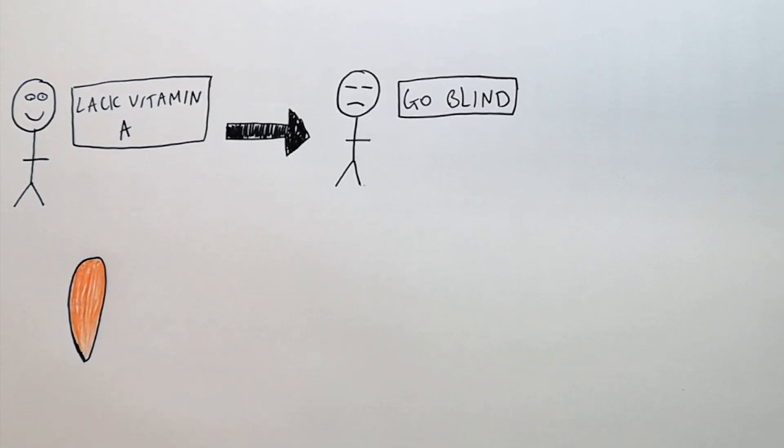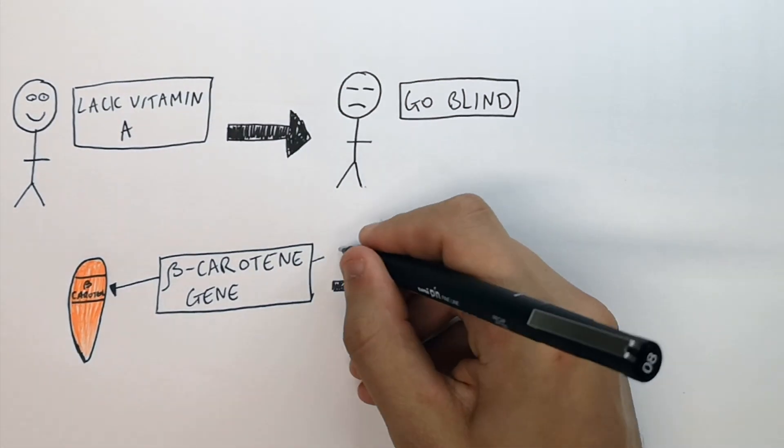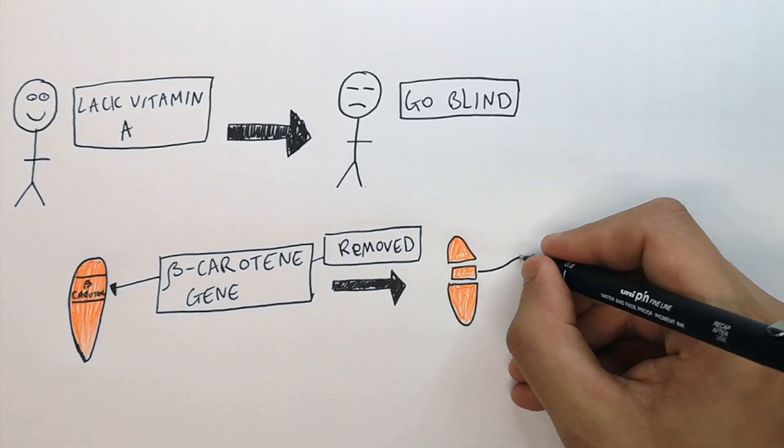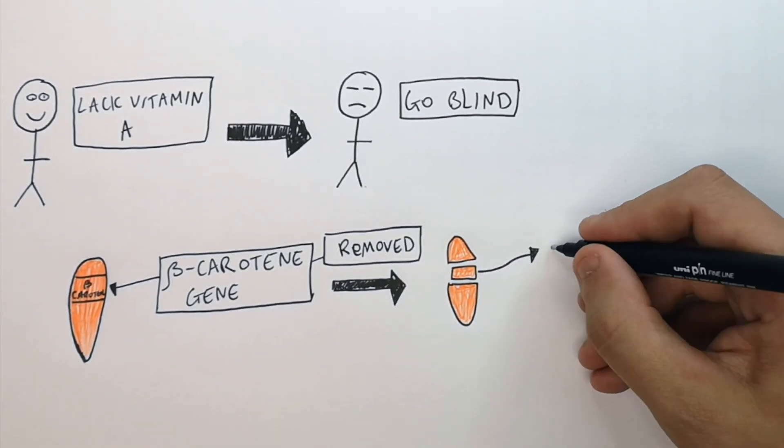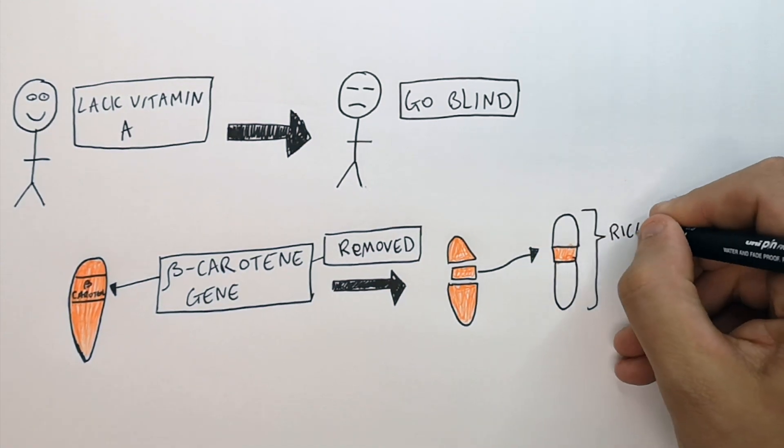To overcome that, you can extract the beta carotene gene from wheat or a carrot. So you will remove the DNA, the gene, from that organism, and then you will insert the beta carotene gene into the rice genome.